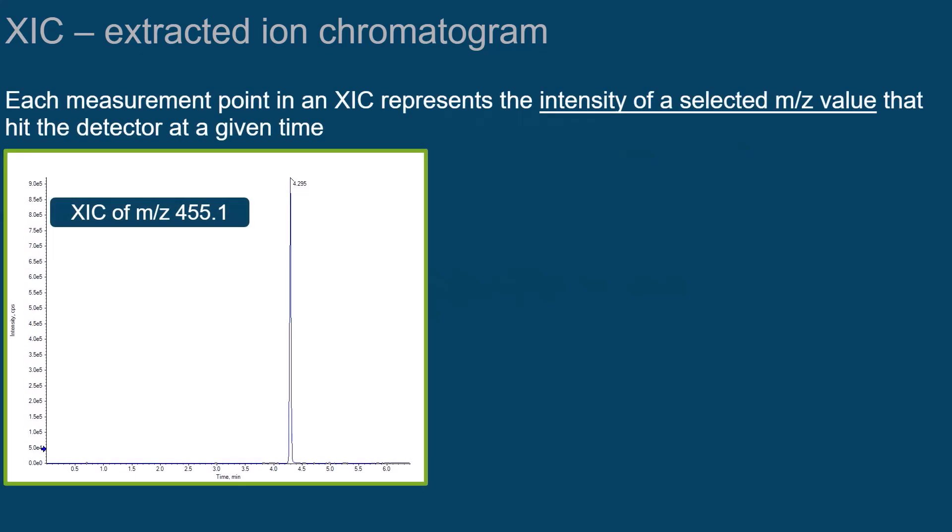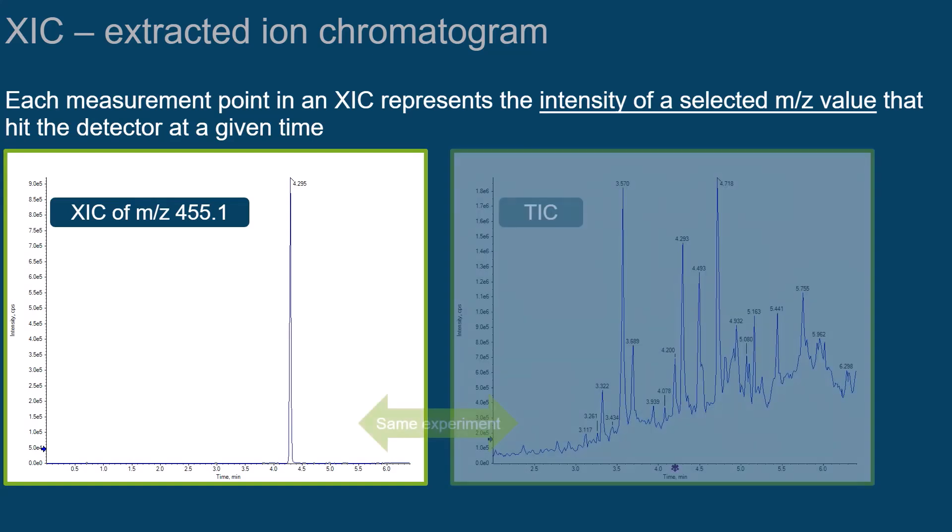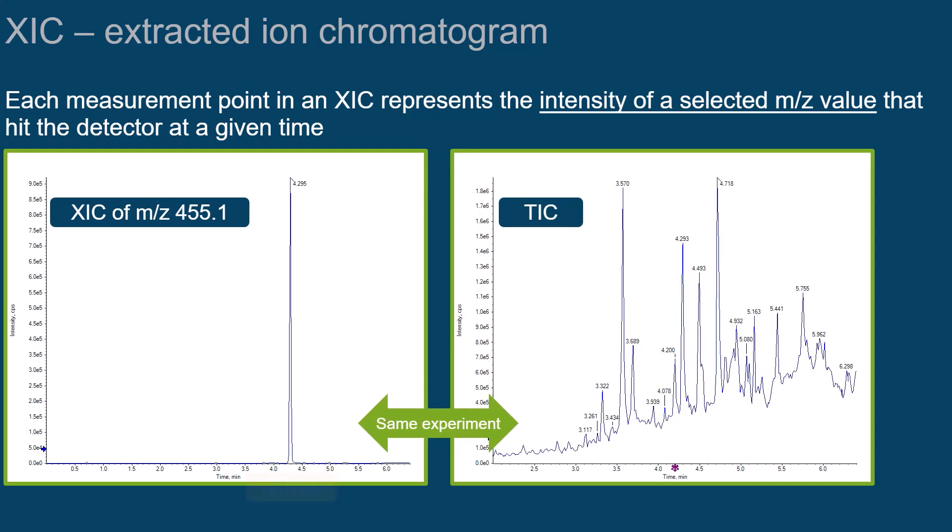So each measurement point in an XIC represents the intensity of a selected M over Z value that hit the detector at a given time. An XIC is useful if you want to see at what time point a particular ion, or more precisely, a certain M over Z value was detected, and with what intensity.